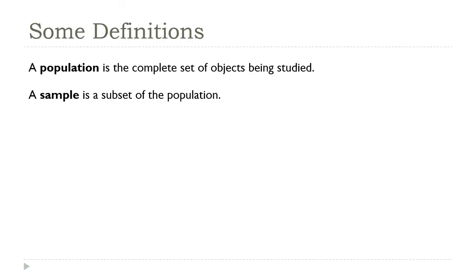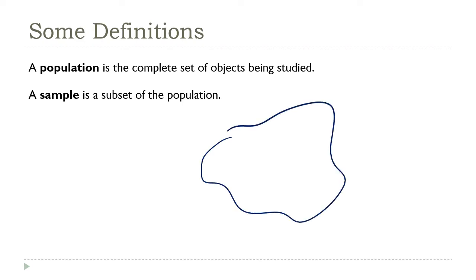The distinction between a population and a sample is at the center of statistics. A population is the entire set of people or things that we're interested in. Most of the time, we won't have access to the entire population. For example, if we're studying salmon in the North Atlantic, there's no way for us to access every salmon and pull every salmon out and examine it.